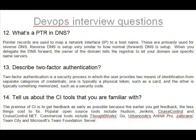Question 13: Describe two-factor authentication. Two-factor authentication is a security process in which the user provides two means of identification from separate categories of credentials — one is typically a physical token such as a card, and the other is typically something memorized such as a security code.